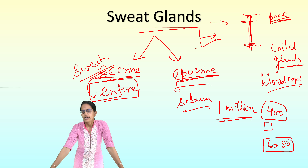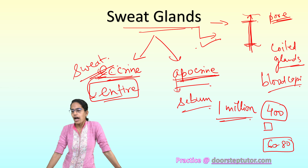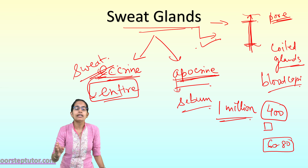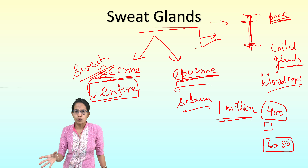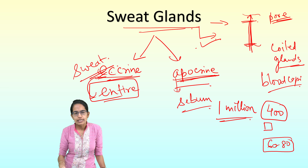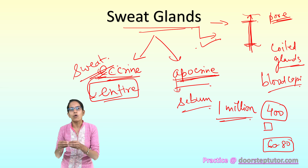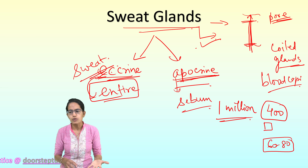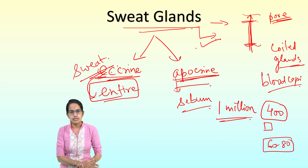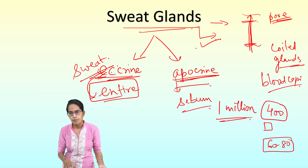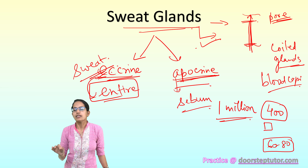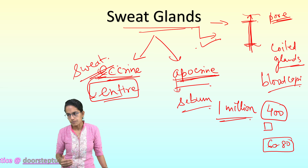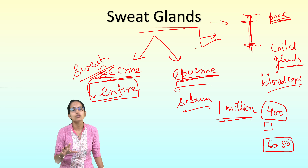Sweat is originally odorless and colorless. The unpleasant odor occurs when organic compounds in sweat are decomposed by bacteria on the surface of the skin. To avoid this unpleasant odor, antiperspirants are used, which are zinc compounds — zinc acts to stop secretion by the sweat glands. This concludes the topic of skin derivatives.